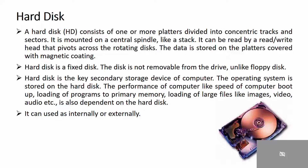Hard disk. A hard disk consists of one or more platters divided into concentric tracks and sectors, mounted on a central spindle like a stack. It can be read by a read-write head that pivots across the rotating disk. The data is stored on a platter covered with a magnetic coating.